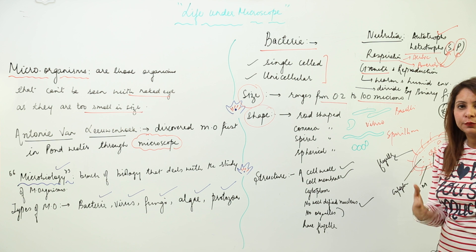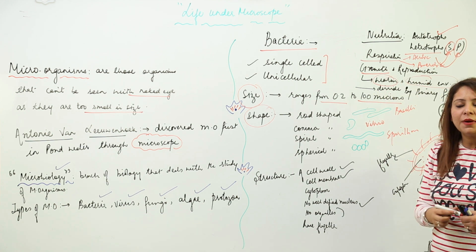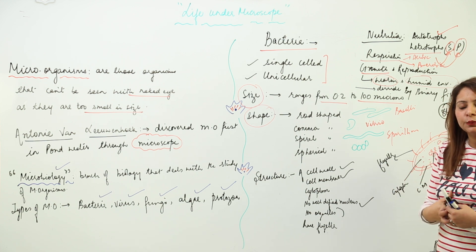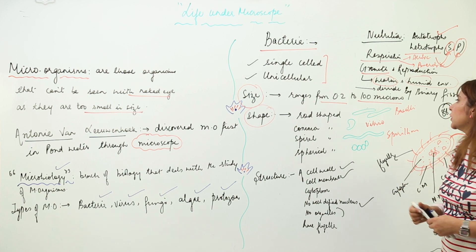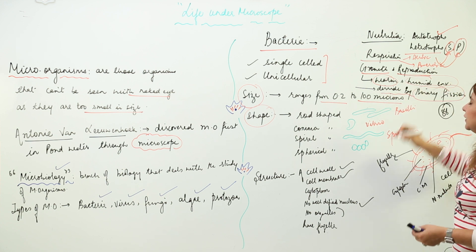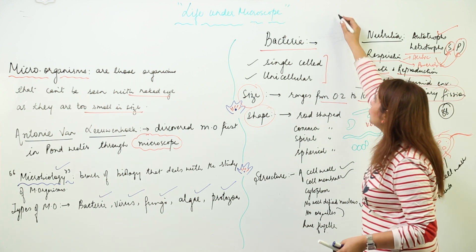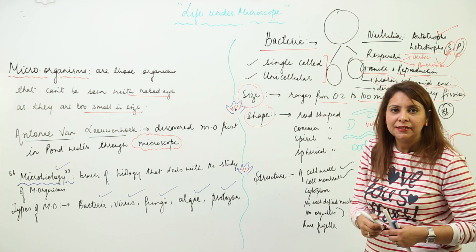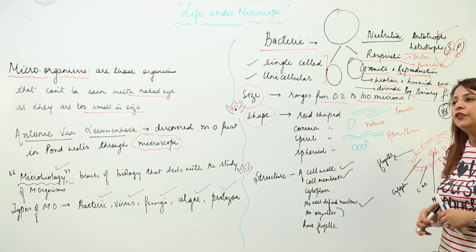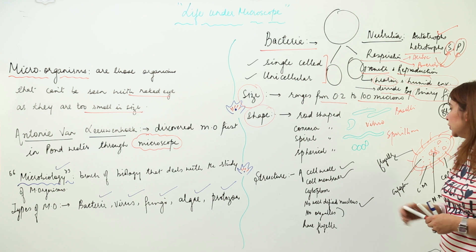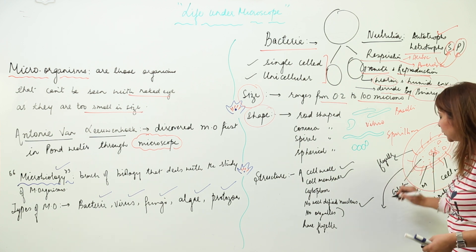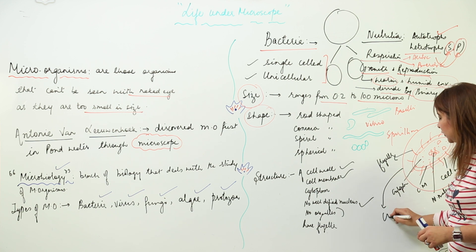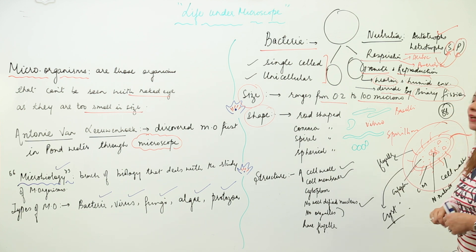Bacteria develop better in a warm and humid environment — that is the appropriate temperature range for their growth. They reproduce by binary fission, a process in which one cell divides into two daughter cells of exactly the same size. When bacteria encounter an unfavorable condition, they secrete a hard protective covering around themselves called a cyst, which protects them until conditions improve.